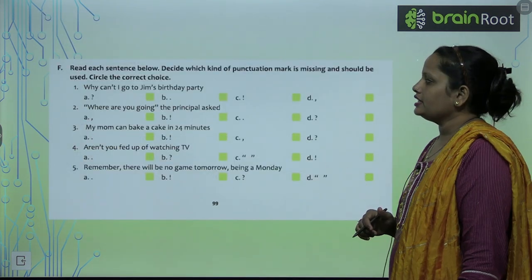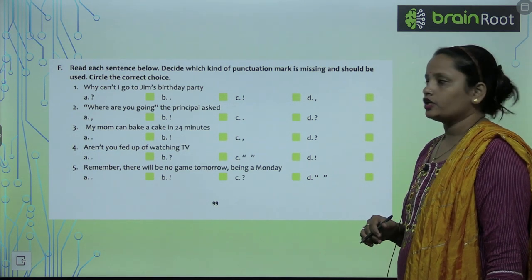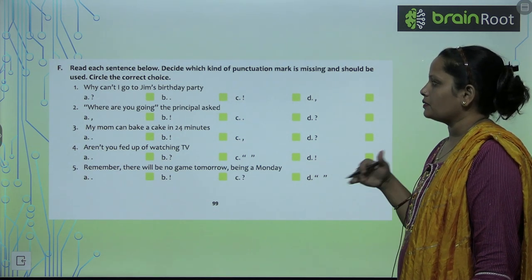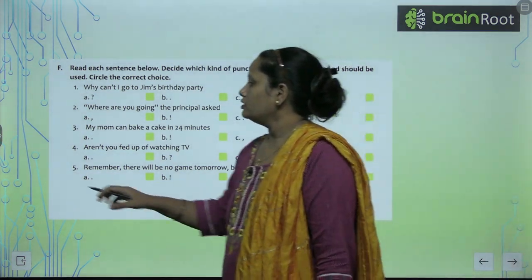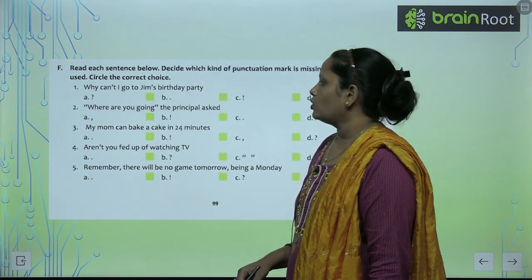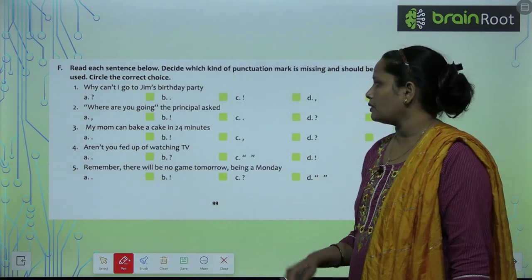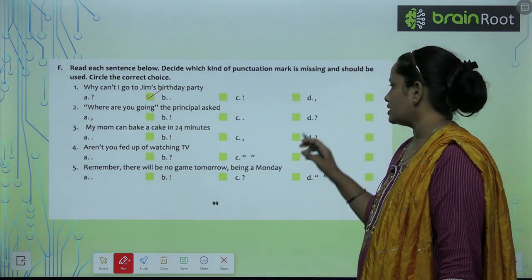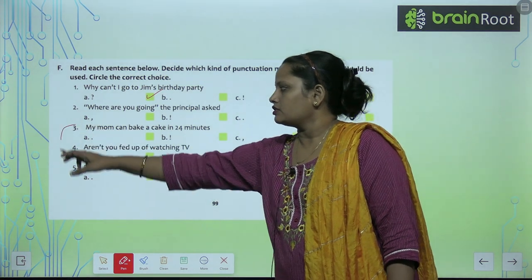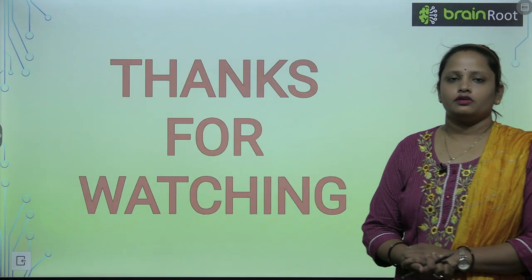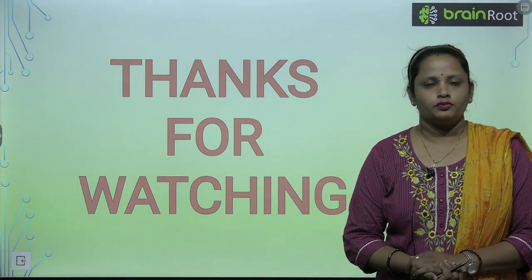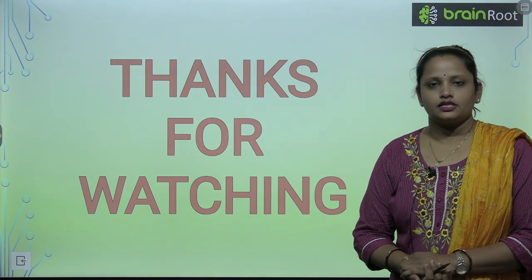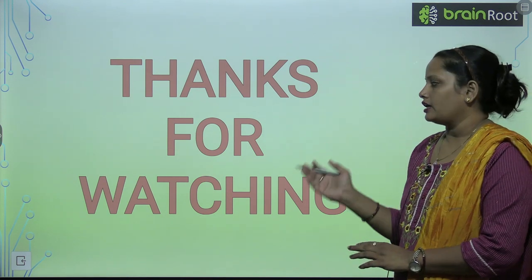Next: rewrite each sentence below, decide which kind of punctuation mark is missing, and circle the correct choice. First: 'Why can't I go to Jim's birthday party?' — question mark. 'Where are you going? the principal asked.' Like this, complete the rest of the questions. With this, children, we have completed the chapter on punctuation marks. I hope you understood this. I will be meeting you soon with a new video. Till then, stay excited for the next video. Thanks for watching.